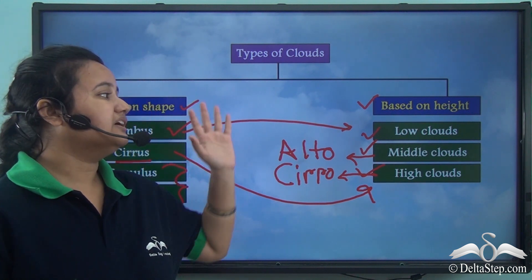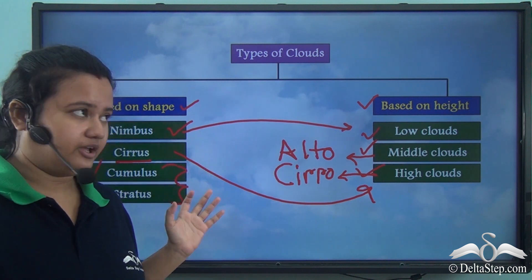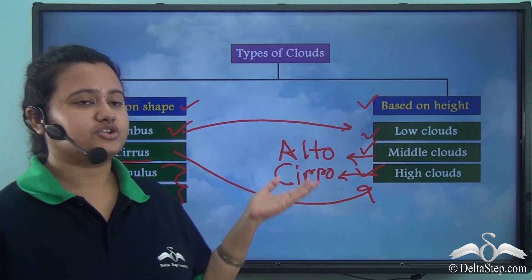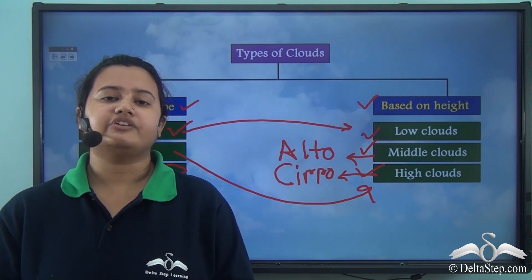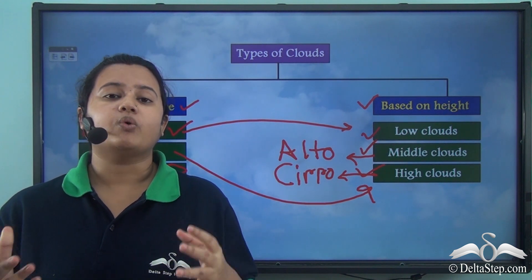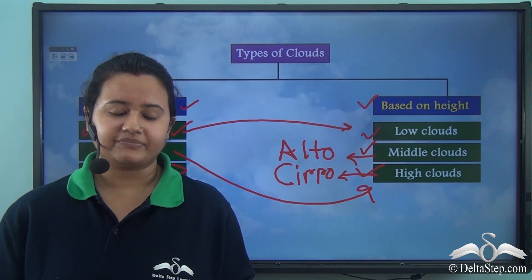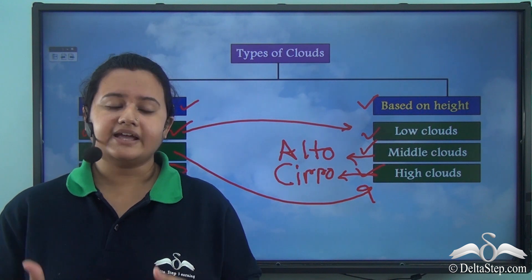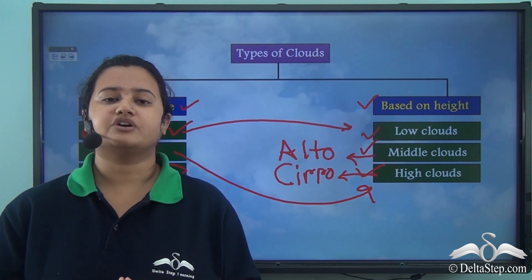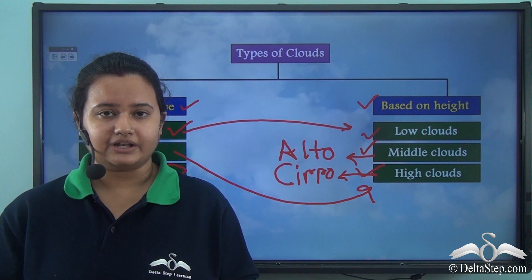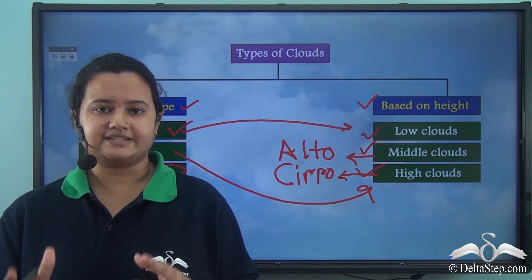These are the different types of clouds based on shape and based on height. In today's video, we read about one form of condensation, that is clouds. In our next video, we will learn about other forms of condensation like dew, fog, and frost.